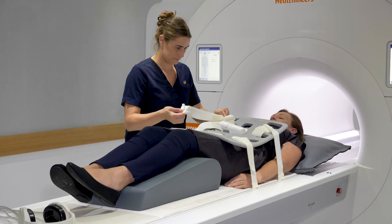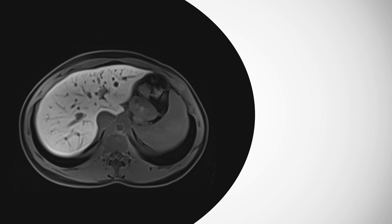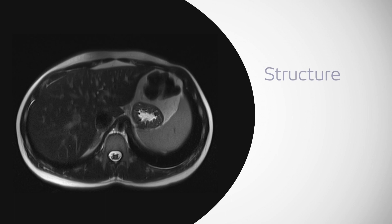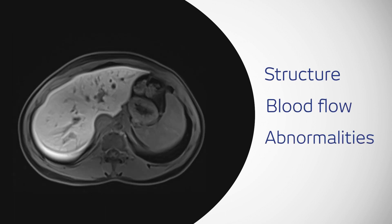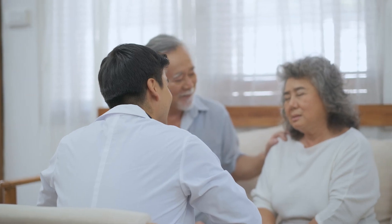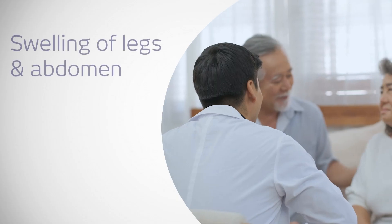Magnetic resonance imaging, or MRI, can be used to diagnose and monitor liver disease. Using strong magnets and radio frequency pulses, MRI can identify the structure and condition of the liver, blood flow, and any abnormalities.